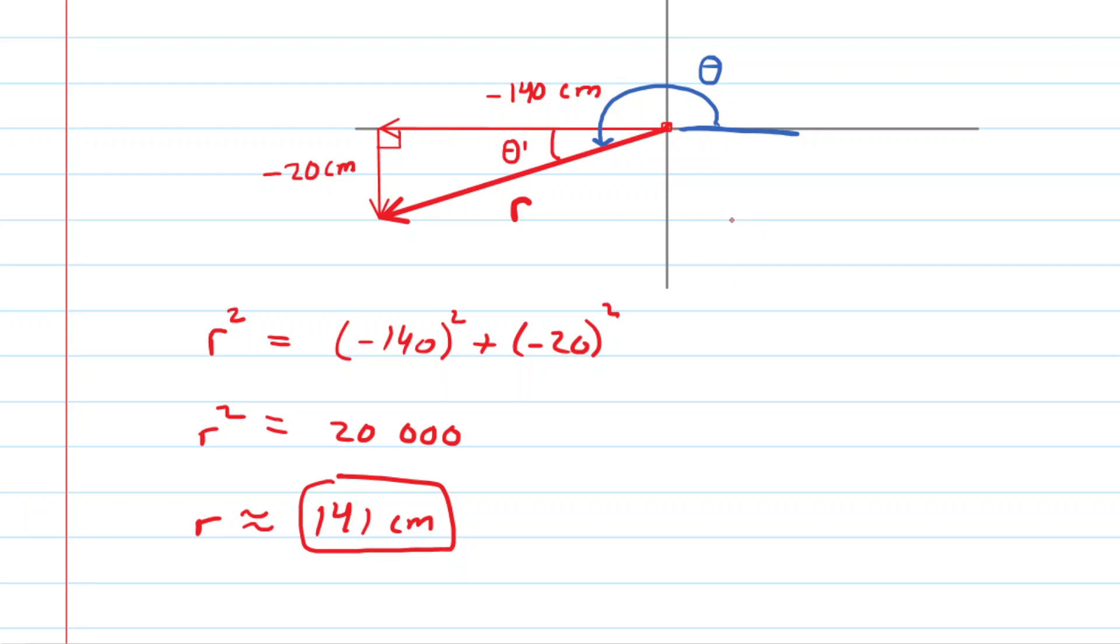Looking at that right triangle, we can see that the tangent of theta prime would equal the side that is opposite of theta prime, which is negative 20, divided by the side that is adjacent to theta prime, which is negative 140. Those negatives would cancel, so you actually could say tangent of theta prime equals 20 over 140. And then to solve for theta prime, you would have to do the inverse tangent. So we're going to take the inverse tangent of 20 over 140. Let's pick up our calculators and find that. That turns out to be approximately 8.1 degrees.